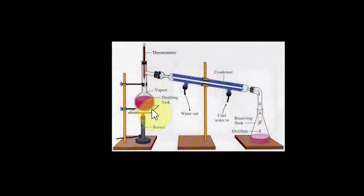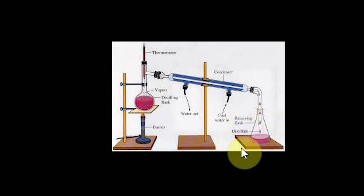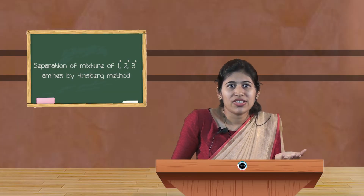The ether layer contains the secondary amine product and the unreacted tertiary amine. Among the two, the tertiary amine is highly volatile, so when distillation is performed, the more volatile tertiary amine comes over first and is collected as a distillate in a conical flask. In this way, we obtain the pure tertiary amine.